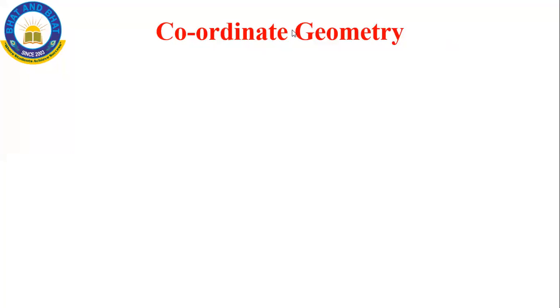Good evening everyone. We will start with the coordinate geometry chapter today. As I told earlier, I will be finishing this chapter in two sessions: one session for concepts and one more session for numerical problems. As per the latest 2020-21 CBSE board announcement, one concept from this chapter has been removed — that is area of triangle. But I will not skip it completely; I will just brief the formula related to that. So let's start. This is an extremely easy chapter, but there are tendencies to get confused when identifying concepts, so listen very carefully.